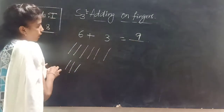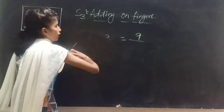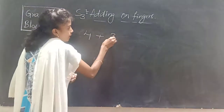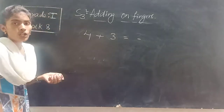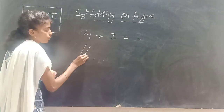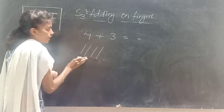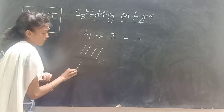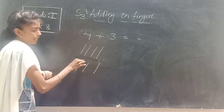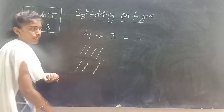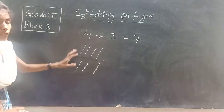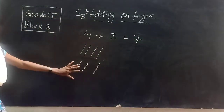Now for example: four plus three is equal to dash. What do you have to do? First take four fingers — one, two, three, four. Next three more fingers — one, two, three. Four after: five, six, seven. So the answer is seven. Using fingers is also very easy.